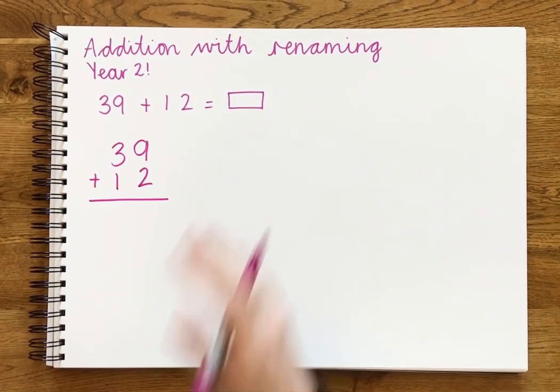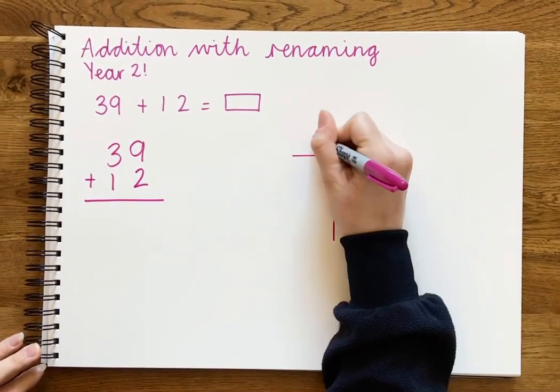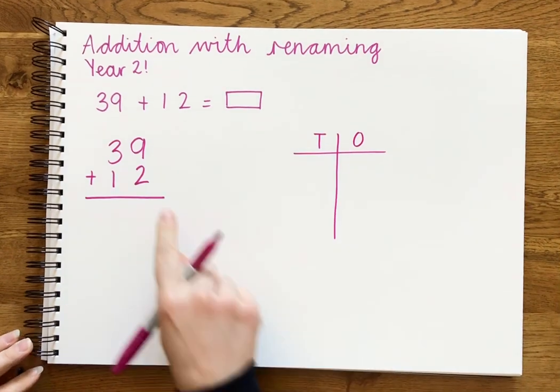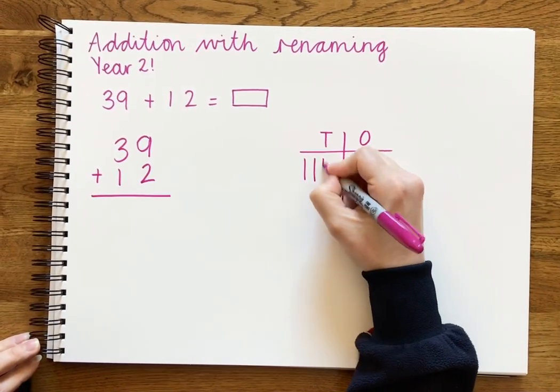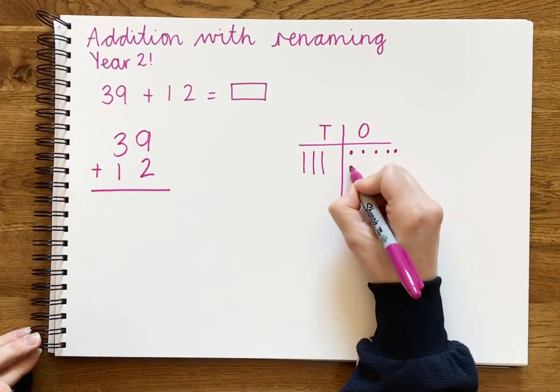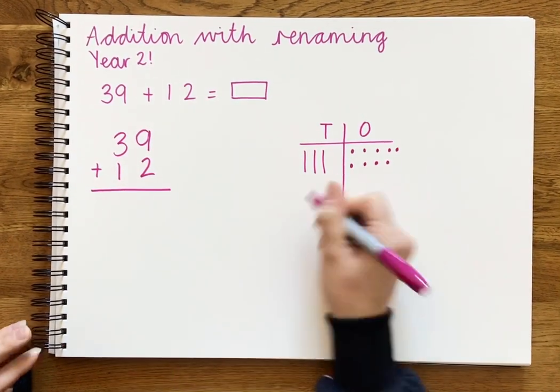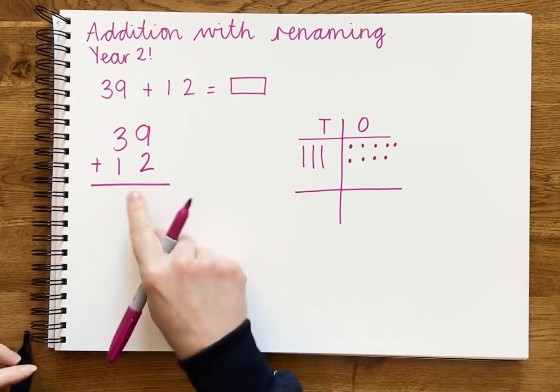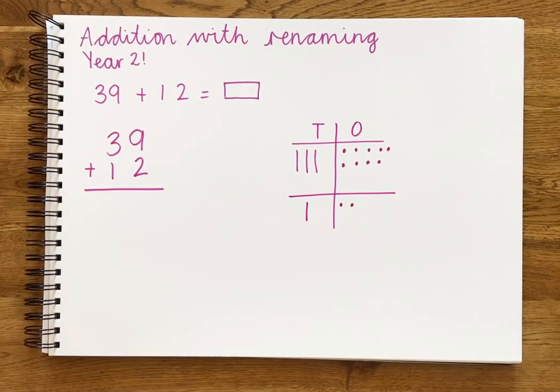Then we're going to put it into a tens and ones column. The first number we're going to put in is 39, so 10, 20, 30, 1, 2, 3, 4, 5, 6, 7, 8, 9. And we're going to be adding 12, so then we put in one 10 and two ones.